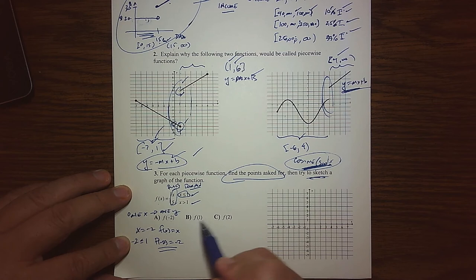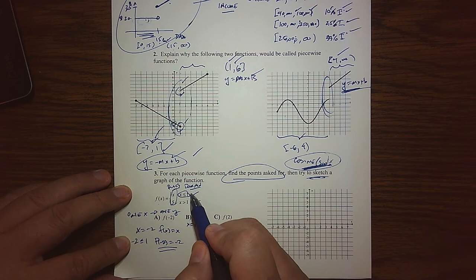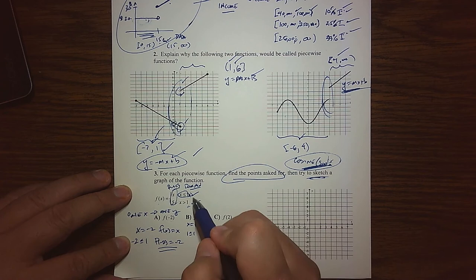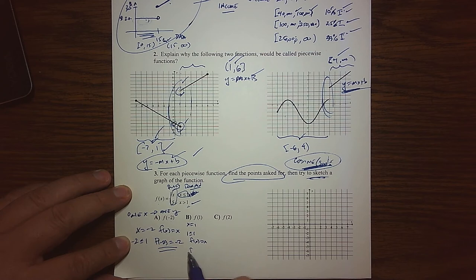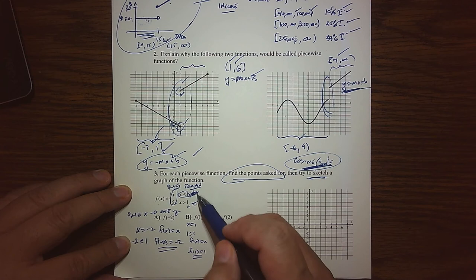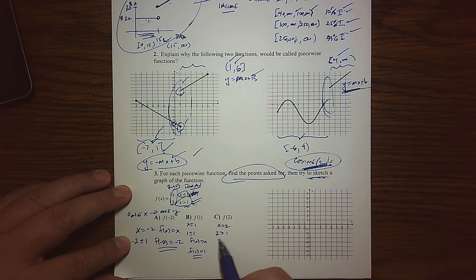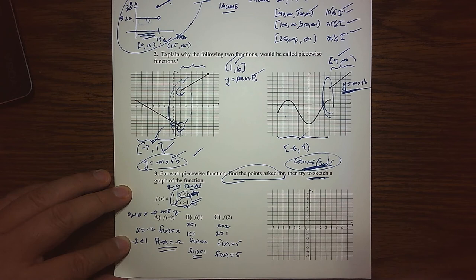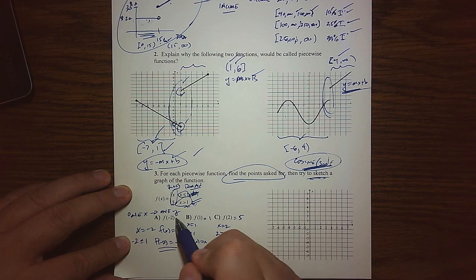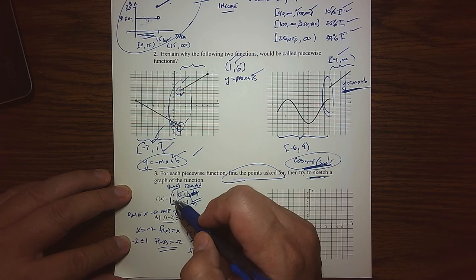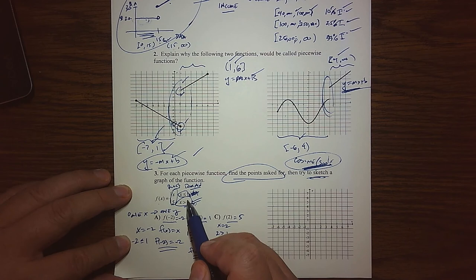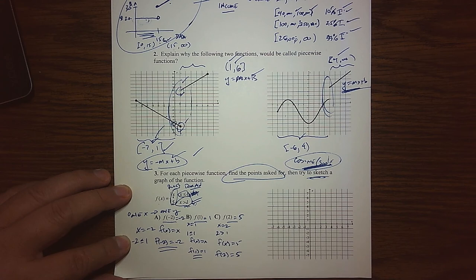For f of 1, x equals 1, and 1 is less than or equal to itself, so we're on that same part of the domain. f of x equals x, so f of 1 is 1. For f of 2, x equals 2, and 2 is greater than 1, so it satisfies that other part of the domain. The rule there is f of x equals 5, so f of 2 is 5. Even though there are two different rules, I'm not finding two different outputs — that would destroy the fact that it's a function. I determine which part of the domain I'm in, turn that rule on, and use it.